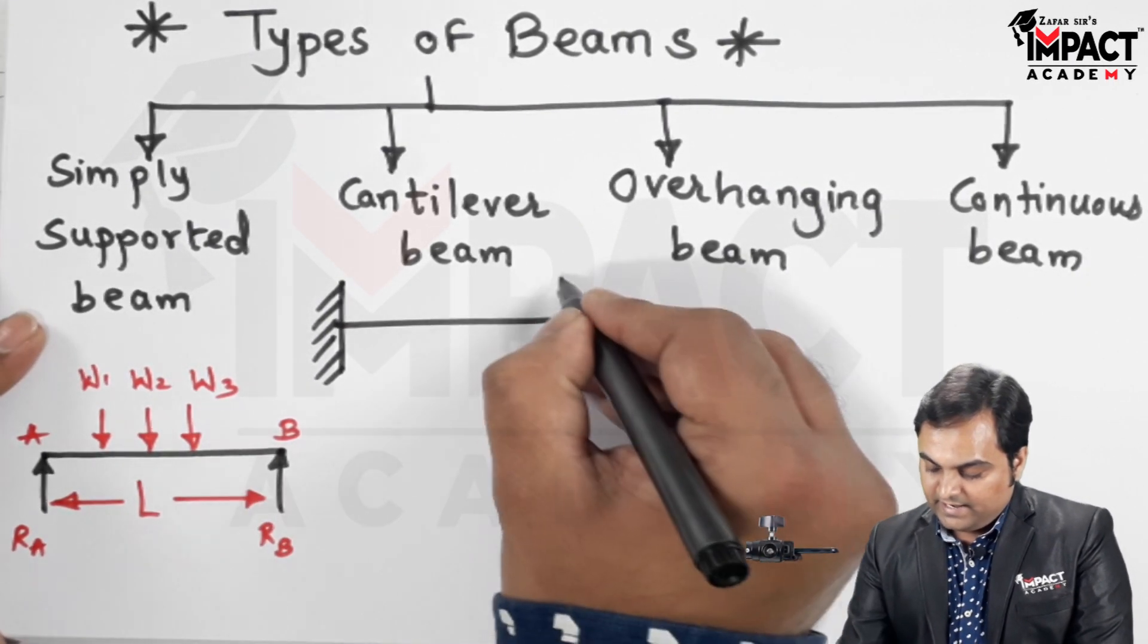Then cantilever beam. It is the beam which is fixed at one end and free at the other end. The span or the length of the beam is denoted by capital L. Under the action of the forces, the reaction would be offered at this fixed support called as A. The reaction would be a vertical reaction, which is RA. Then there will be horizontal reaction if horizontal forces are present. At the same time, there would be moment reaction at this fixed end. So that is a cantilever beam: fixed at one end, free at the other end.